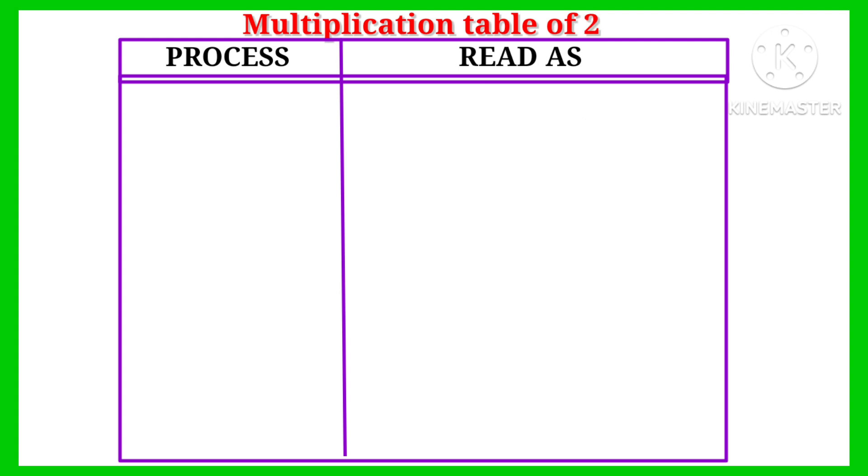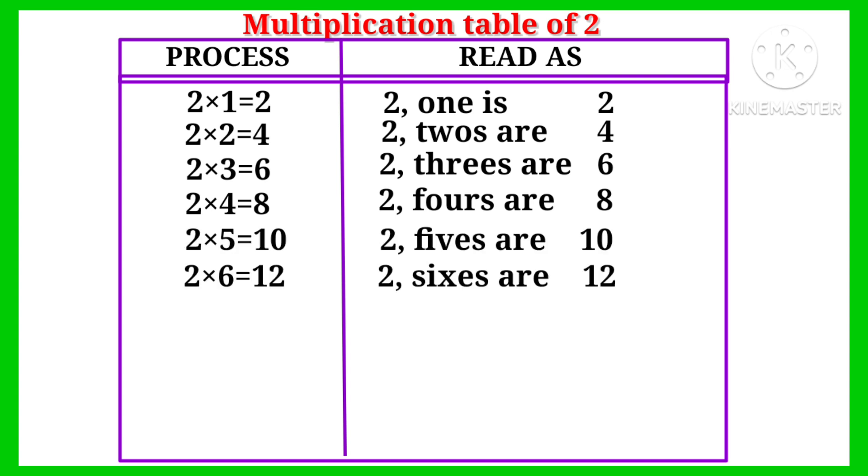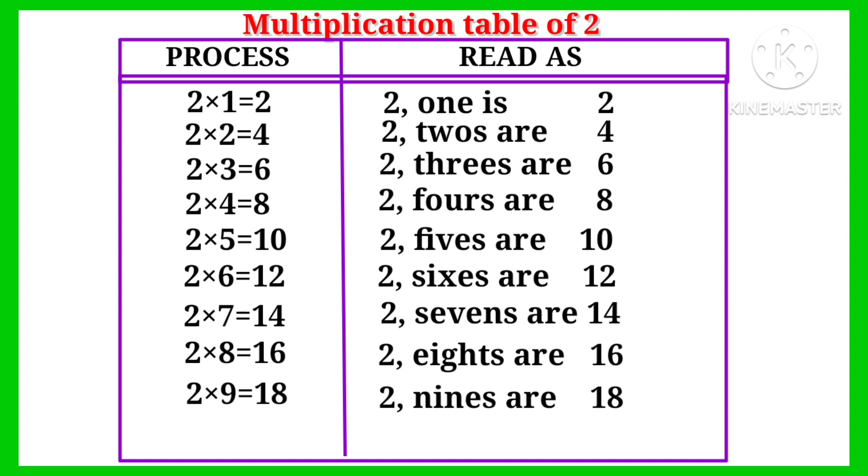Multiplication table of two: two one is two, two twos are four, two threes are six, two fours are eight, two fives are ten, two sixes are twelve, two sevens are fourteen, two eights are sixteen, two nines are eighteen, two tens are twenty.